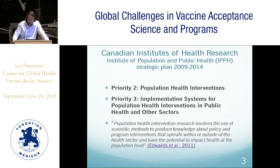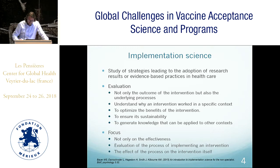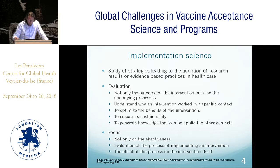Moving from results to implemented public health strategy is one of the priorities of the Canadian Institute of Health, and there is a strategy plan of the Institute of Population and Public Health to move in this direction. Implementation science is the study of strategies leading to the adoption of research results or evidence-based practices in healthcare. The evaluation is not only on the outcome of interventions but also to understand the underlying processes of implementation — to better understand why an intervention worked in a specific context, to optimize benefits, and to ensure sustainability.